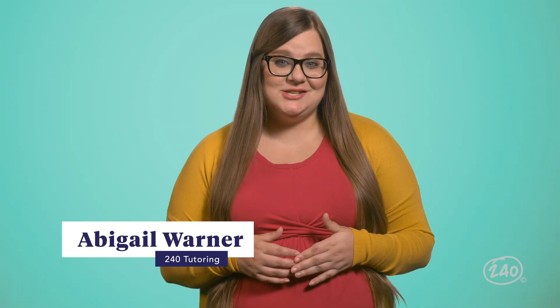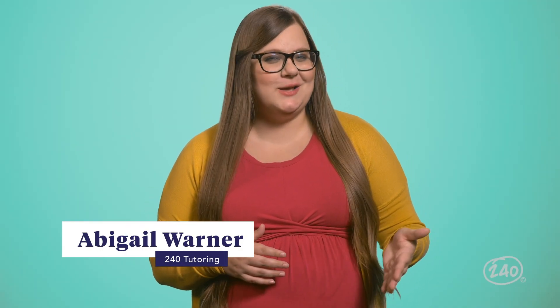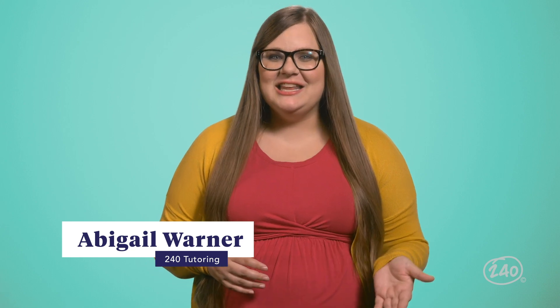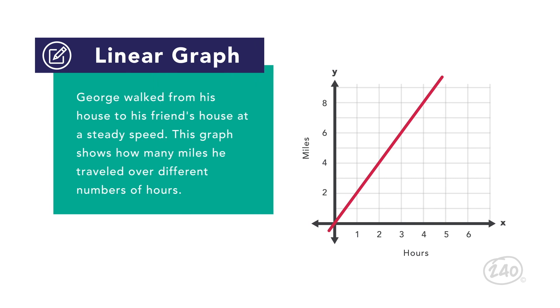A graph is a visual representation of all the possible solutions to the equation it represents. A linear equation's graph can be used to answer many real-world problems. For example, George walked from his house to his friend's house at a steady speed. This graph shows how many miles he traveled over different numbers of hours.